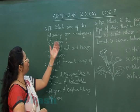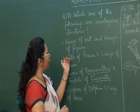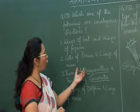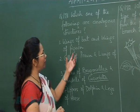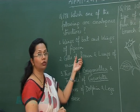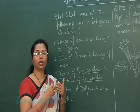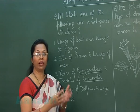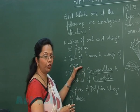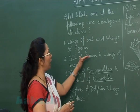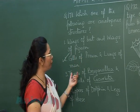Question 171: Which of the following are analogous structures? Options include wings of bat and wings of pigeon, gills of prawn and lungs of man, thorns of Bougainvillea and tendrils of Cucurbita, and flippers of dolphin and legs of horse. The best answer is gills of prawn and lungs of man. To identify analogy, there must be no common ancestry — prawn is an invertebrate and humans are vertebrates, so they are unrelated groups.